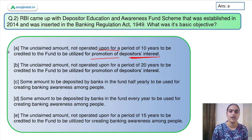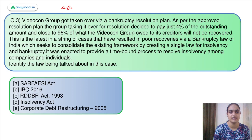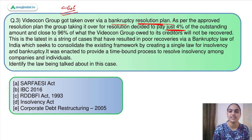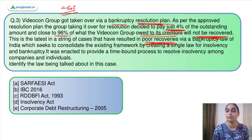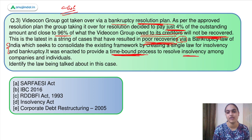Now let's move to the next question — a case-based question. Videocon group got taken over via a bankruptcy resolution plan. As per the approved plan, the group taking it over for resolution decided to pay just 4% of the outstanding amount, and 96% of what Videocon group owed to its creditors will not be recovered. This is the latest case in a string of cases that has resulted in poor recoveries via the bankruptcy law of India, which consolidates the existing framework and creates a single law for insolvency and bankruptcy, enacted to provide a time-bound process to resolve insolvency among companies and individuals.